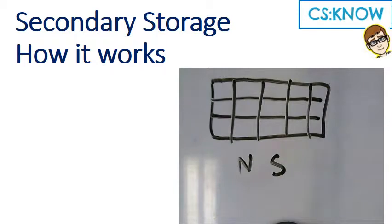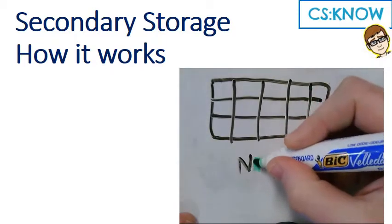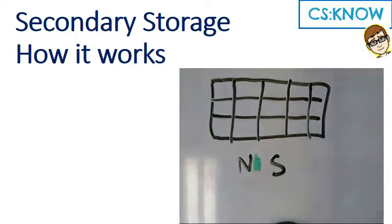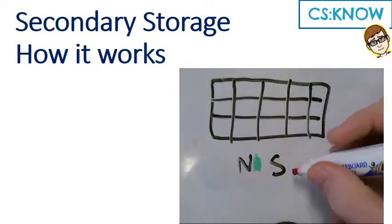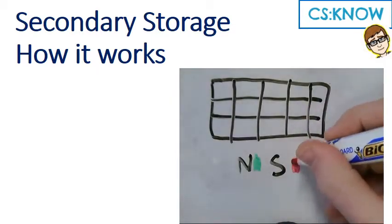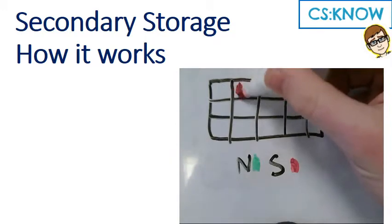It's stored based on magnets. Now a magnet has got two sides to it, a north and a south. So what happens is the zeros and ones in this case are basically whether it is charged with north or south.